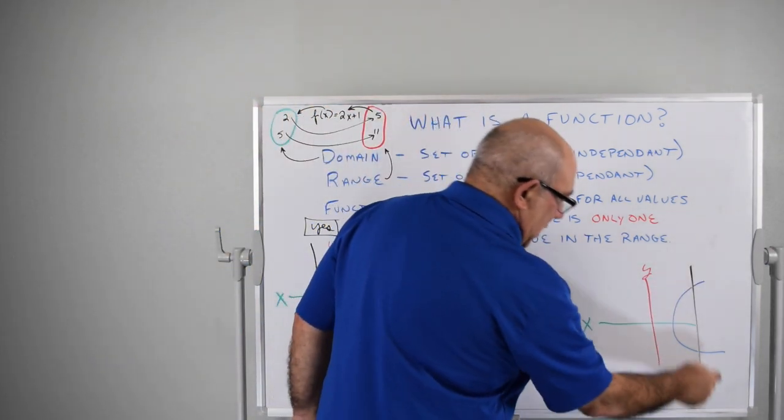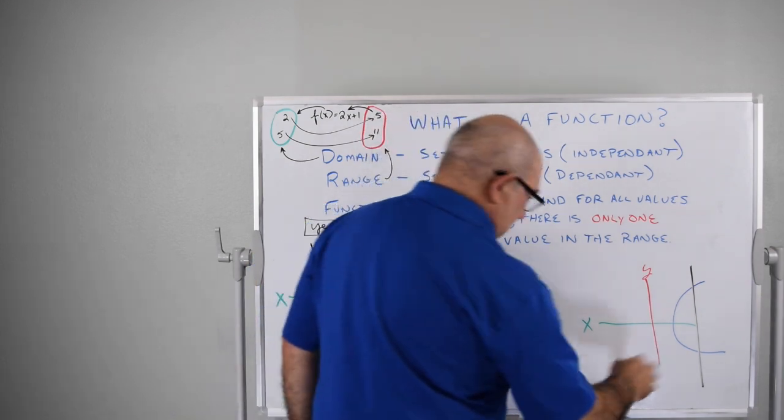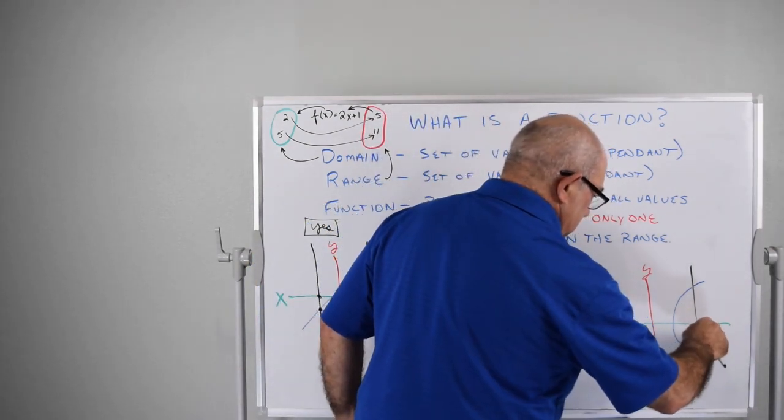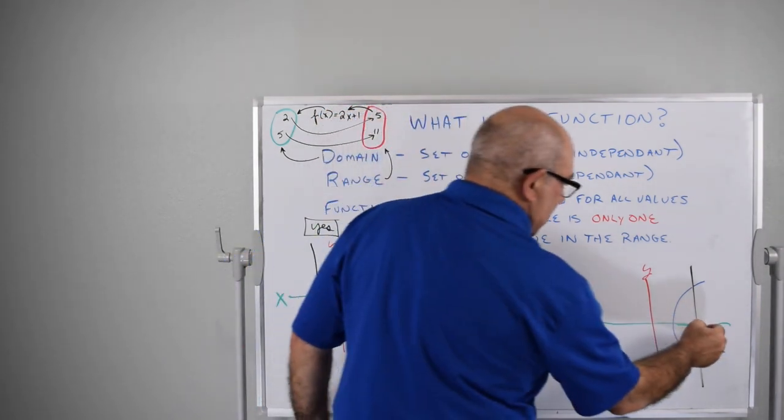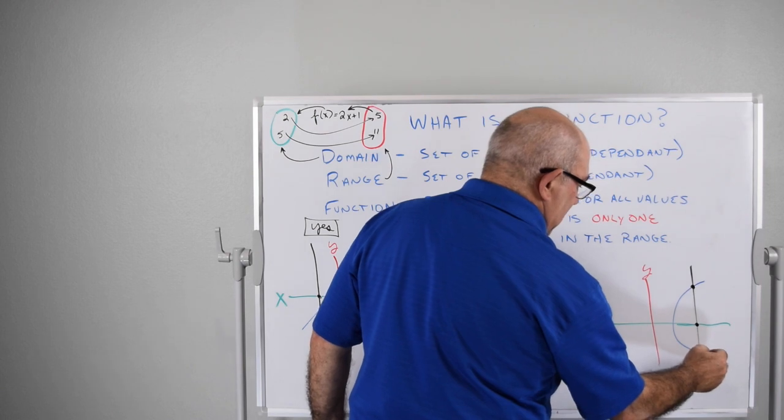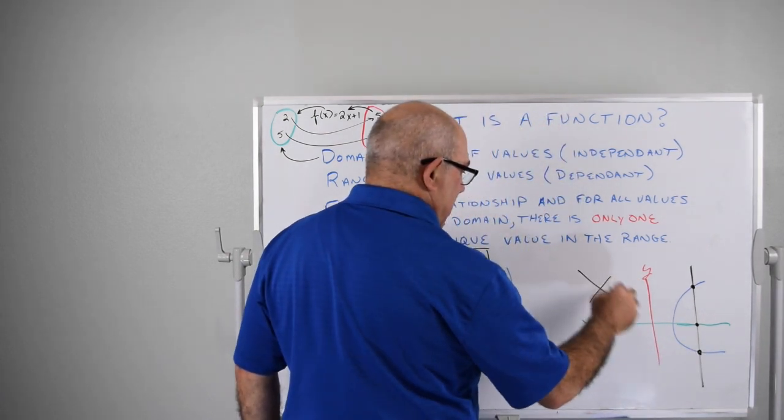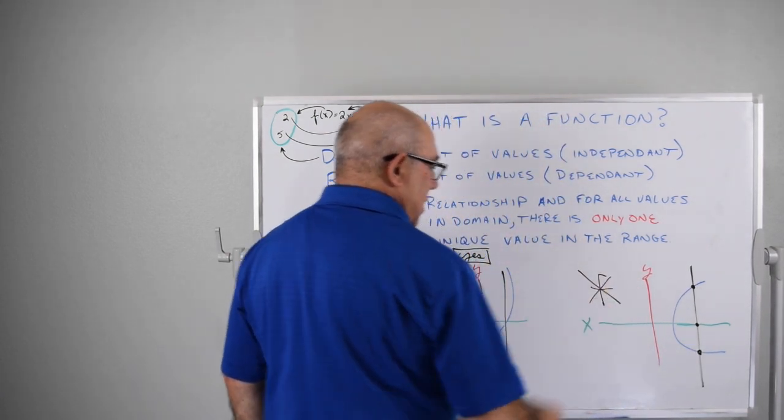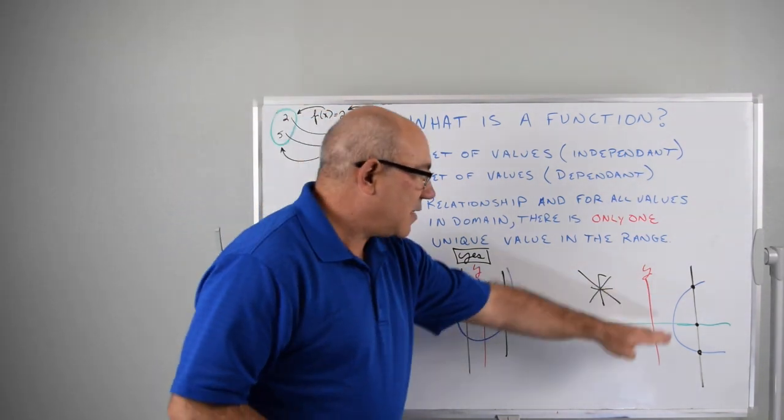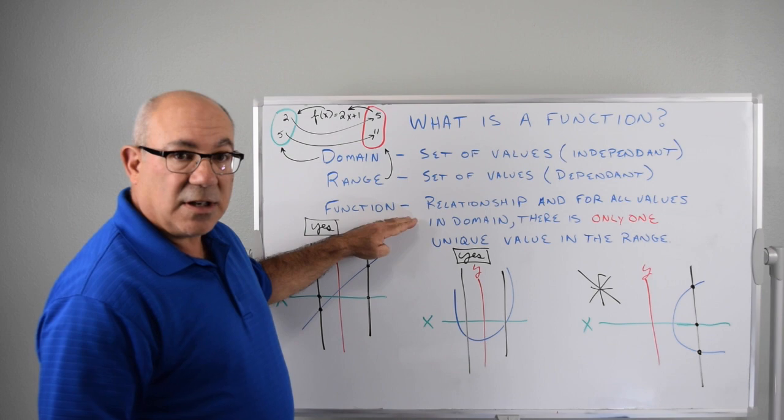Now, if I draw a line here, for this same value of x, like that, for this same value of x, I have two values of y. So not a function. That's not a function. So this would not satisfy the definition of a function.